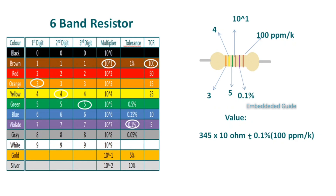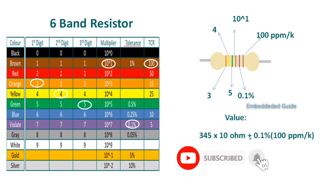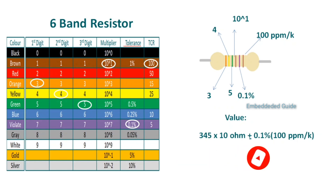So we can find out the resistor value using color coding. I hope this video helps you find out the resistor value and color coding. If you like this video, please share it and don't forget to subscribe to Embedded Guide. Thank you for watching.